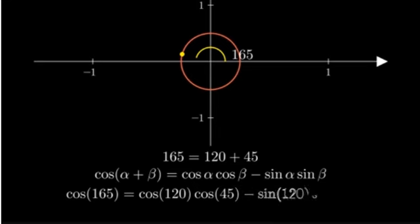Cosine of 165 degrees equals cosine of 120 degrees times cosine of 45 degrees minus sine of 120 degrees times sine of 45 degrees.